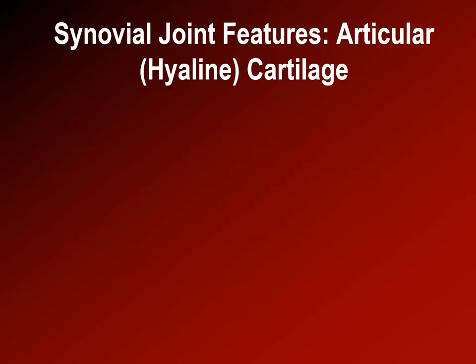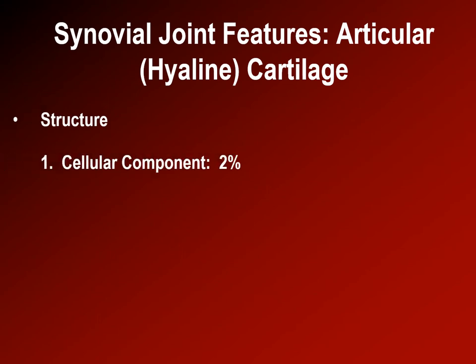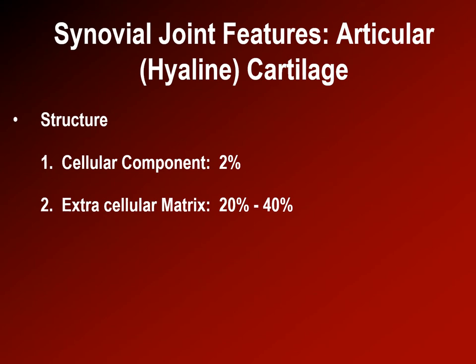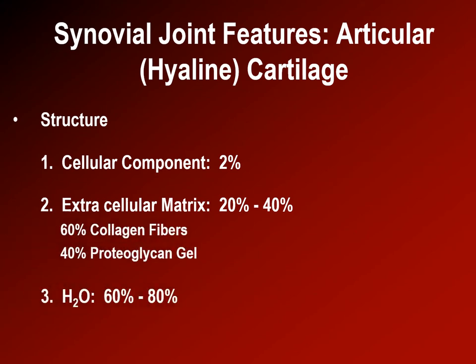Hyaline cartilage is a very important substance in musculoskeletal health. It does not have a very high cellular component — only two percent of the weight of articular cartilage consists of living cells. The extracellular matrix, which includes collagen fibers, glycosaminoglycans, and proteoglycans, makes up between 20 and 40 percent of the mass, and all the rest is water.